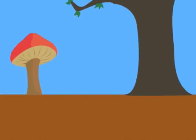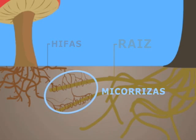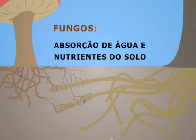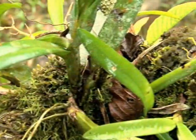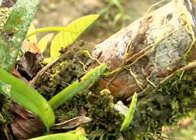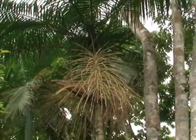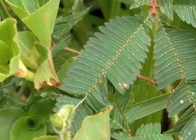Existem também as micorrisas, que são associações de fungos com raízes de plantas. Nesta associação, os fungos absorvem água e nutrientes do solo, transferindo parte deles para a planta. A planta, por sua vez, oferece aos fungos os açúcares sintetizados na fotossíntese. Com todas essas informações, dá para perceber que são as características próprias de cada um que tornam as plantas, as algas e os fungos organismos tão importantes na natureza.